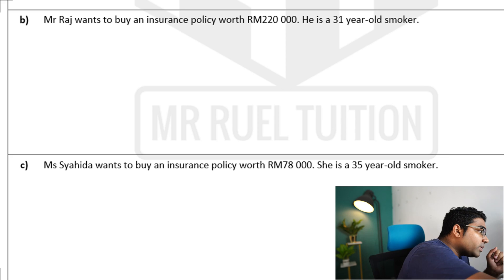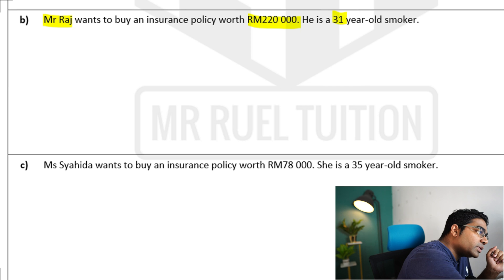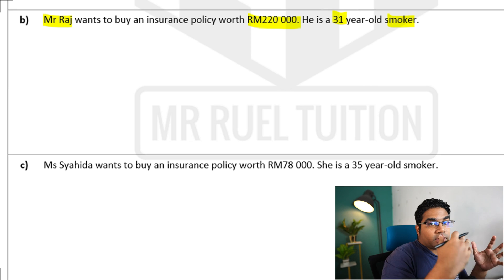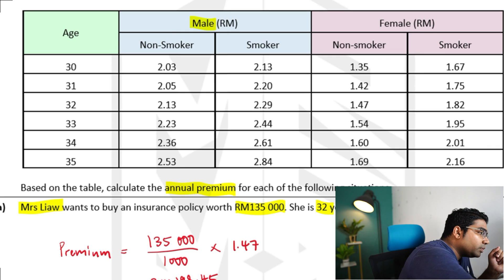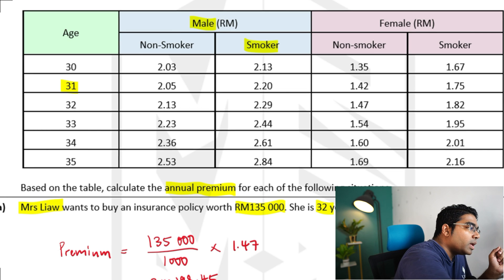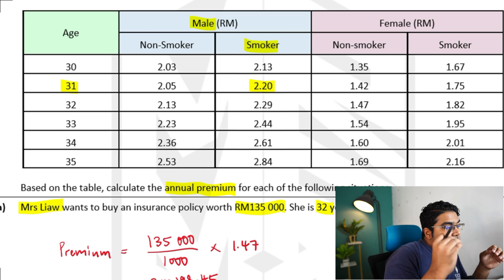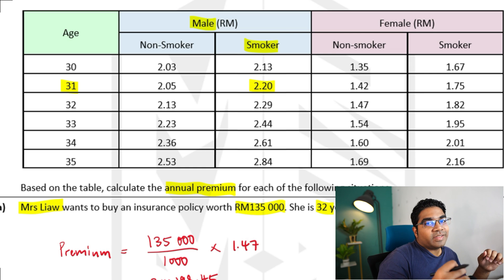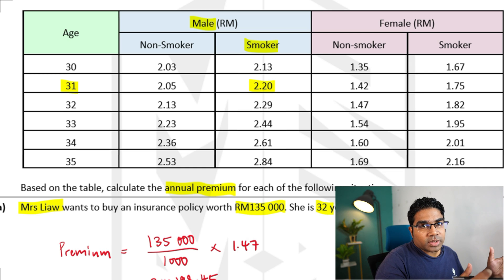Let's try one more. Mr. Raj wants to buy an insurance policy worth RM220,000. He's a 31-year-old smoker. Mr. Raj is a male, he's a smoker, and he's 31 years old. Therefore, his premium rate would be 2 ringgit and 20 cents per thousand ringgit face value of policy.